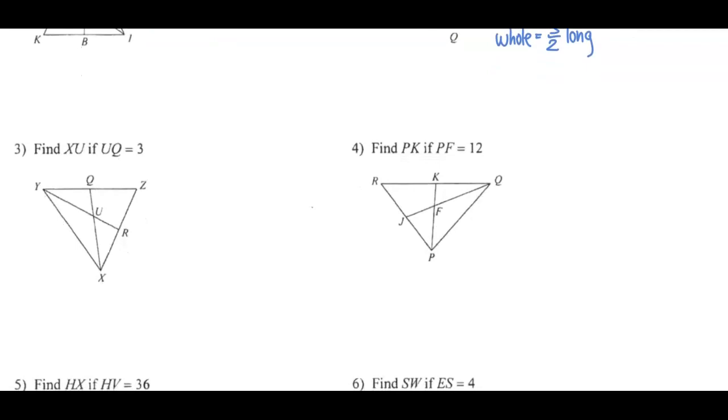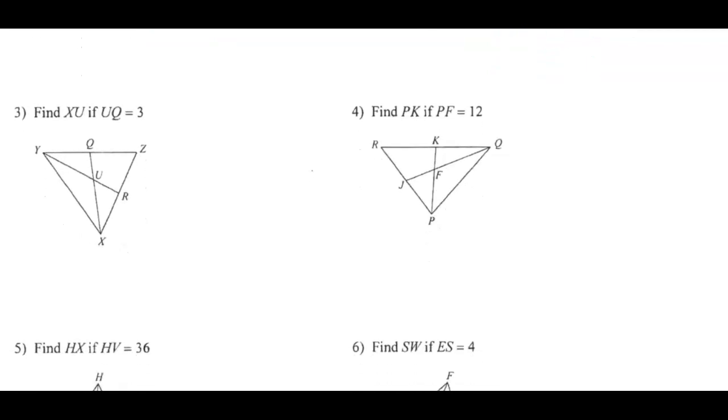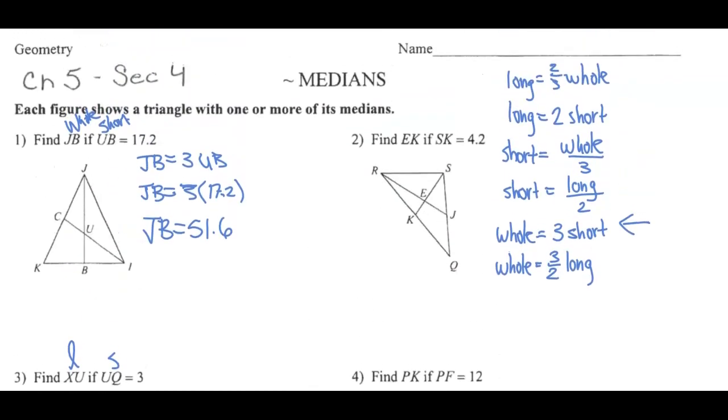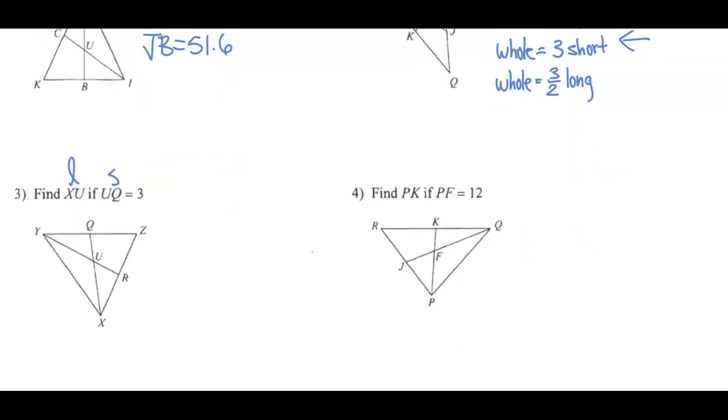Now, if we continue working, we're looking at XU. XU is the long. UQ is the short. How can we figure out the long if we know the short? We're looking long will equal two times the short. So, long equals two times the short. XU equals two times UQ which is three in this case. XU will equal six.